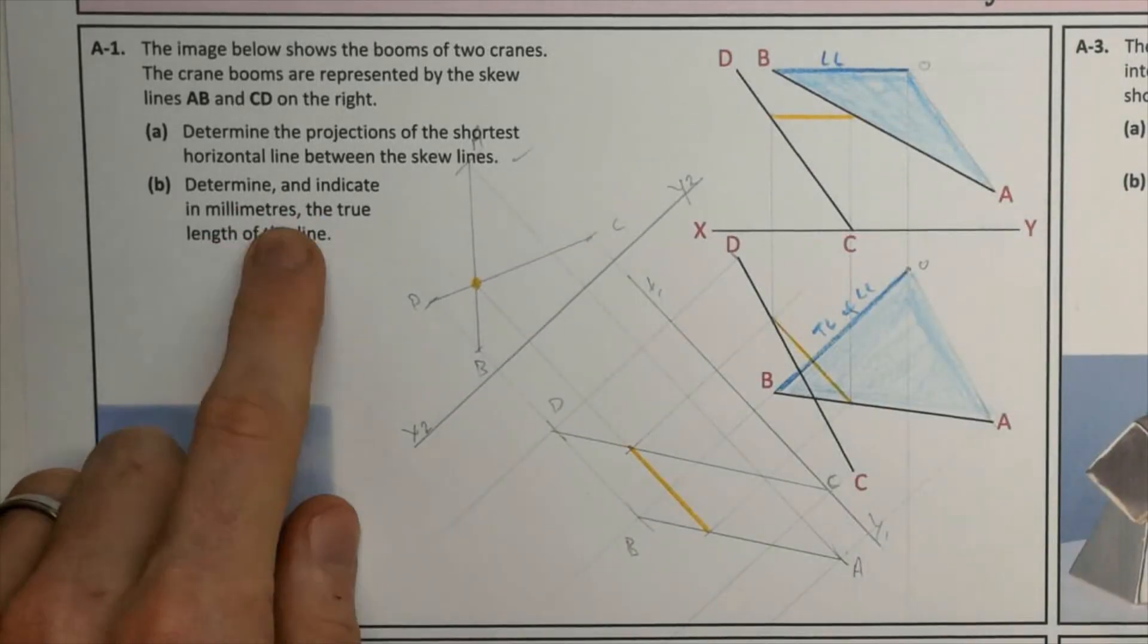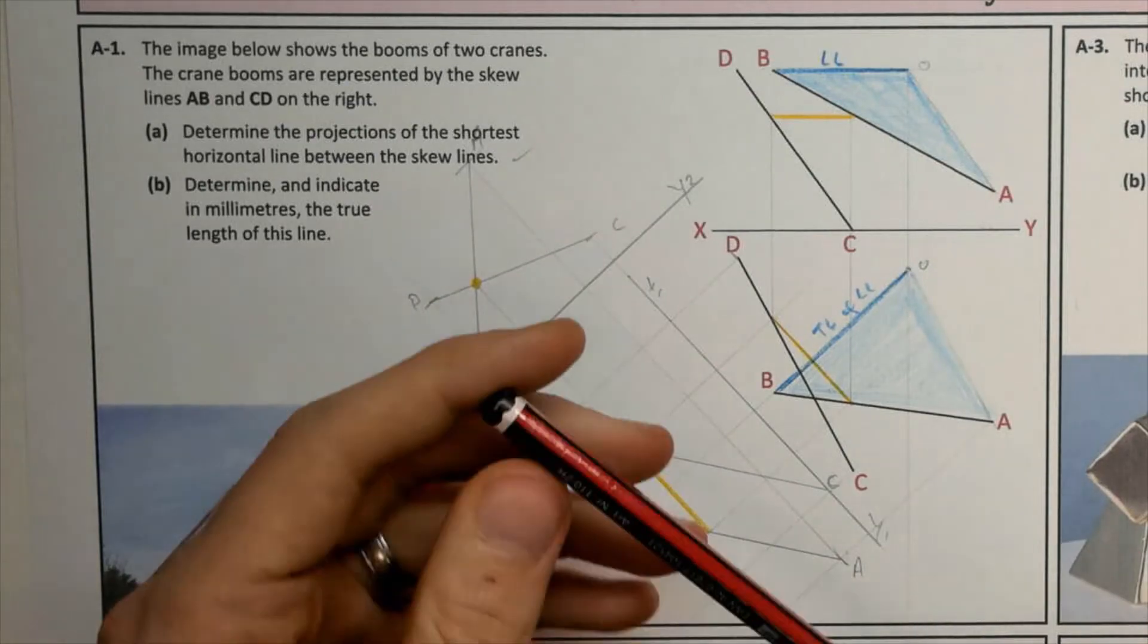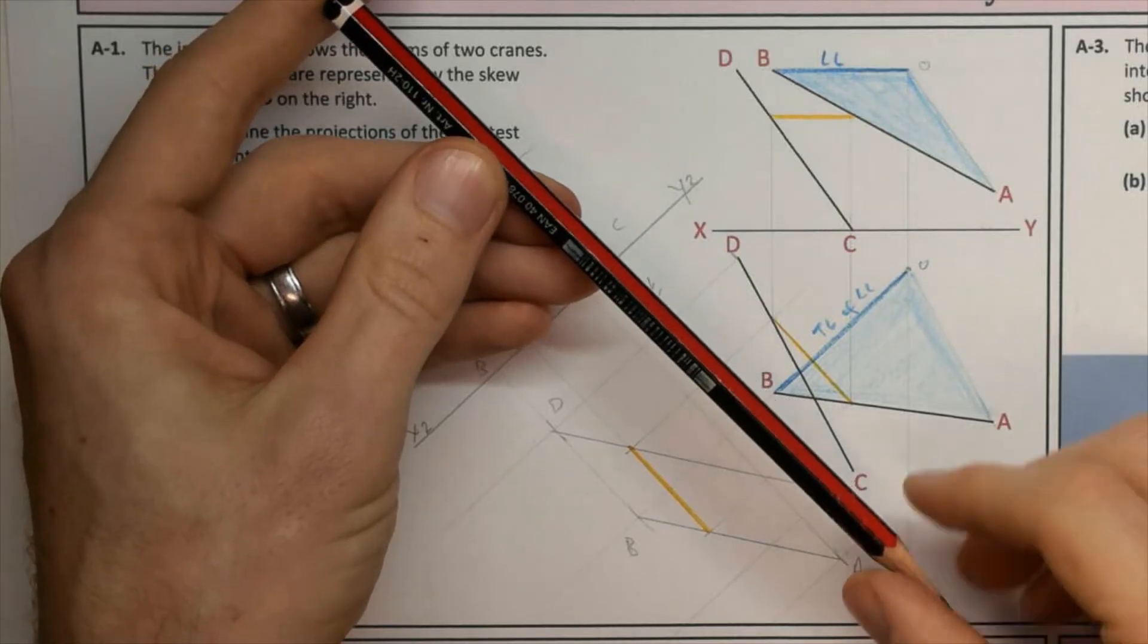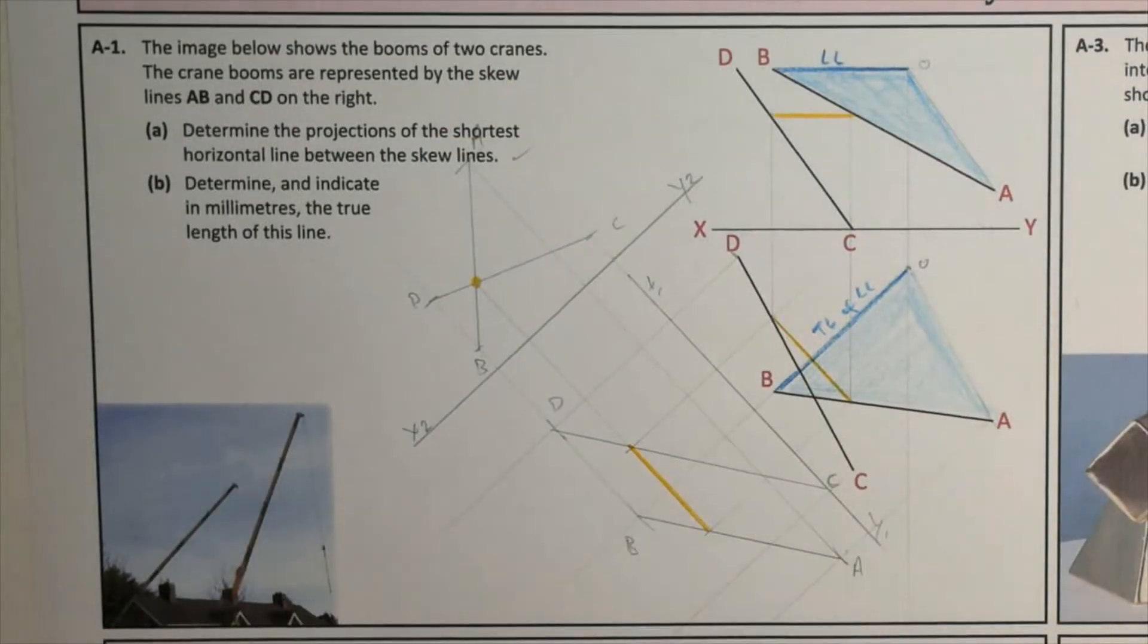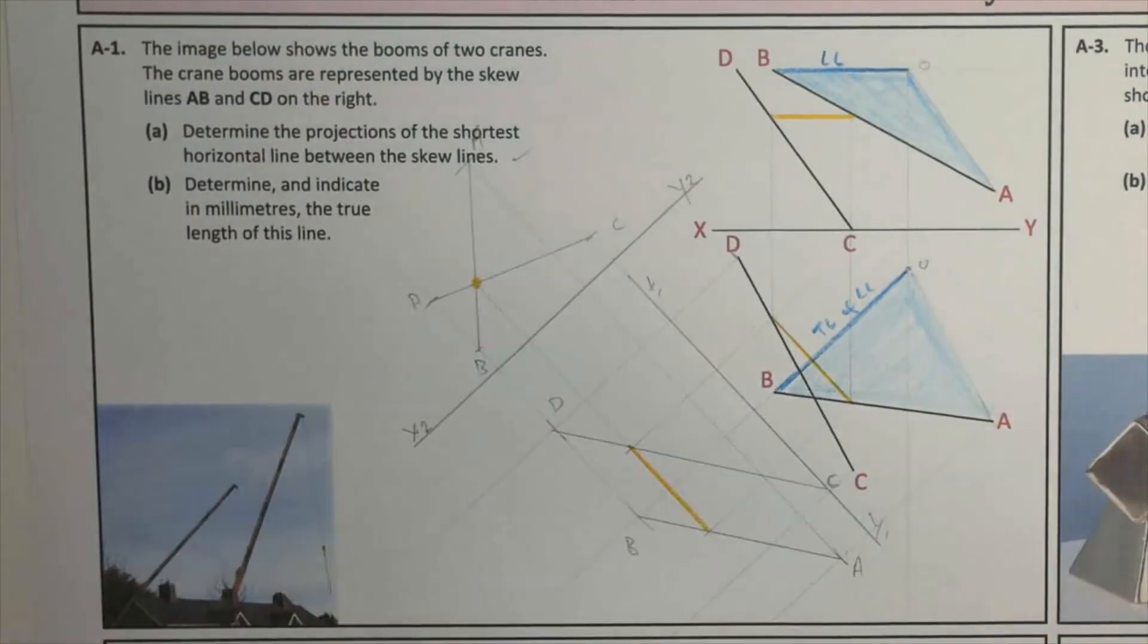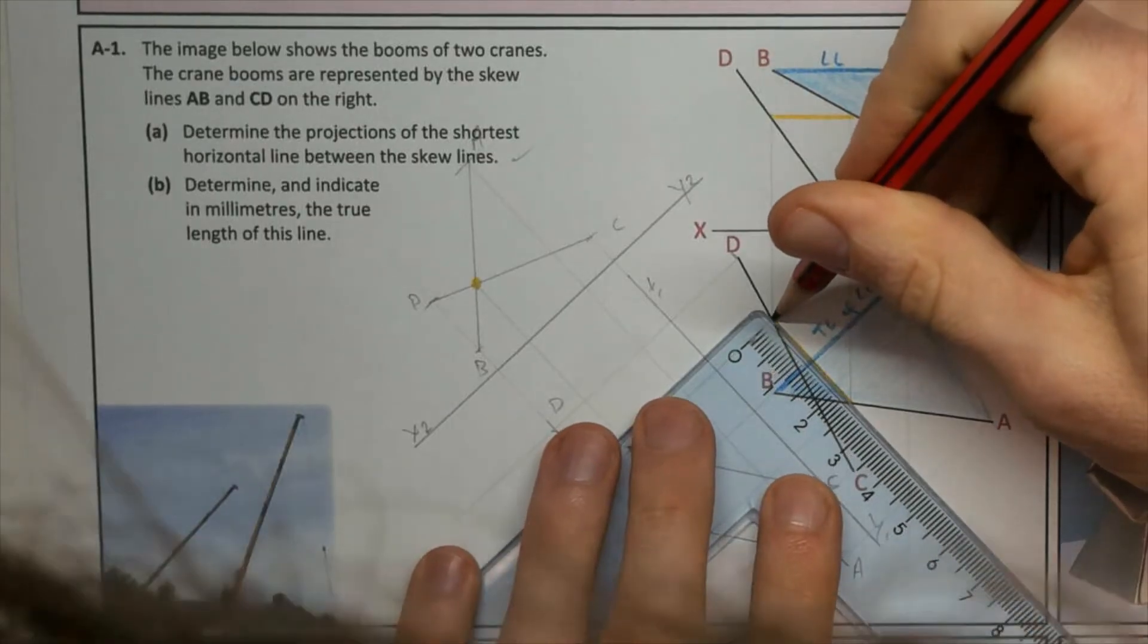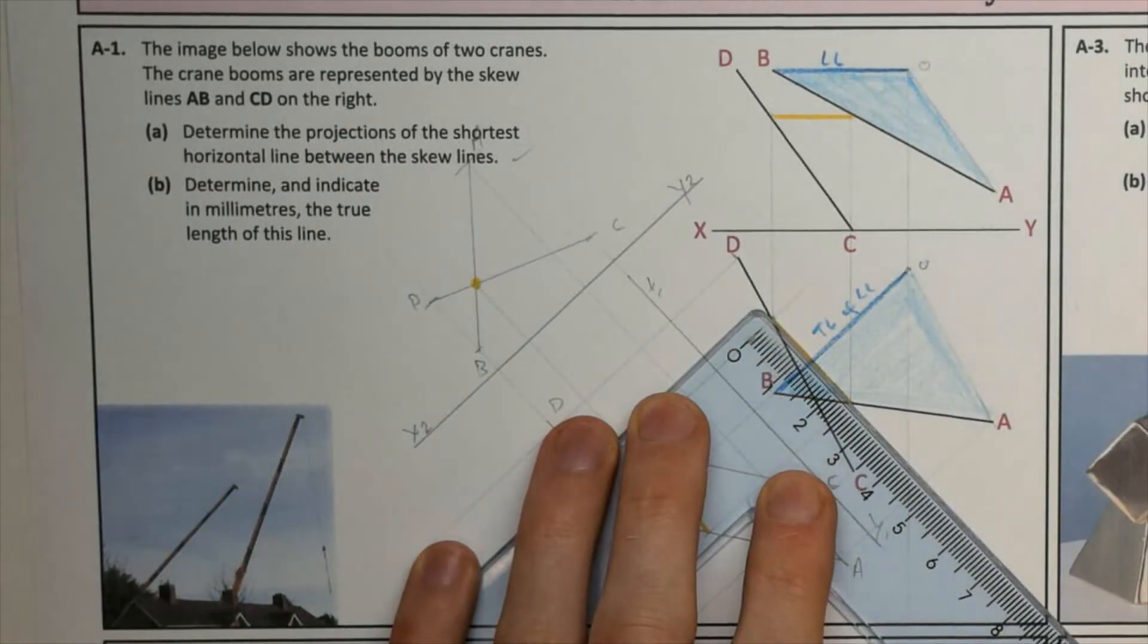Determine and indicate in millimeters the true length of this line. Because it is a horizontal line and we look down on top of a horizontal line, like my pencil here, it's being horizontal, we actually have the true length of it. So, here is the true length. But they want us to indicate in millimeters. So, I've got that at 24 millimeters. And I'll indicate that with my pen here.